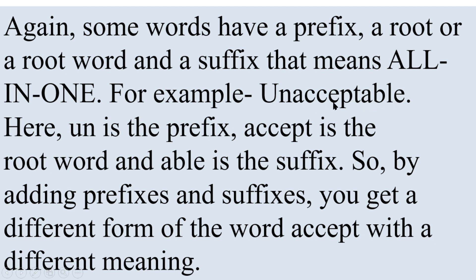'Except' or 'accept' is the root word. '-Able' is the suffix. So the word 'unacceptable' contains the prefix 'un-,' the root word 'accept,' and the suffix '-able.'